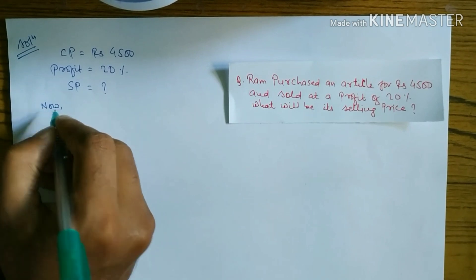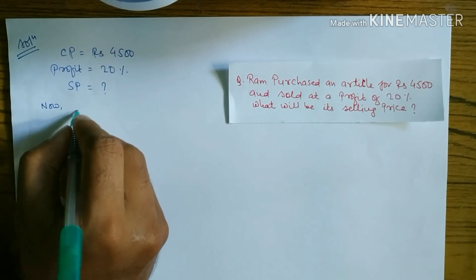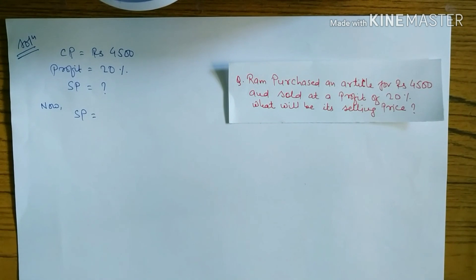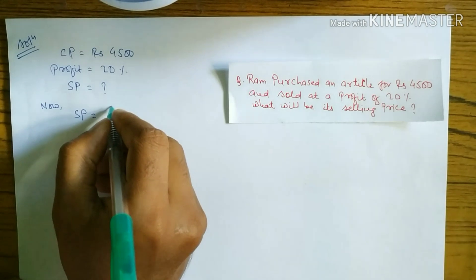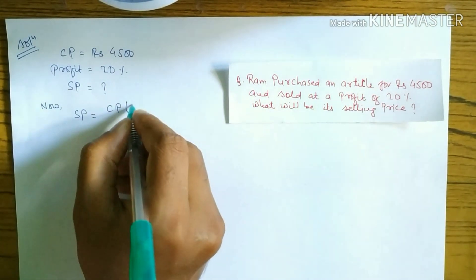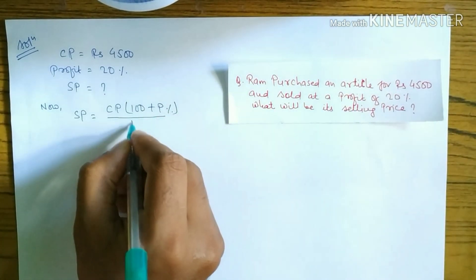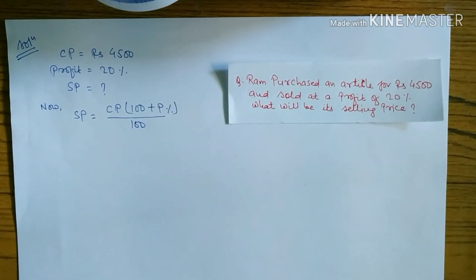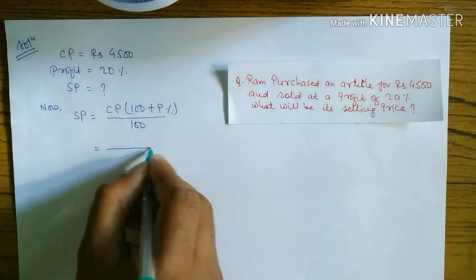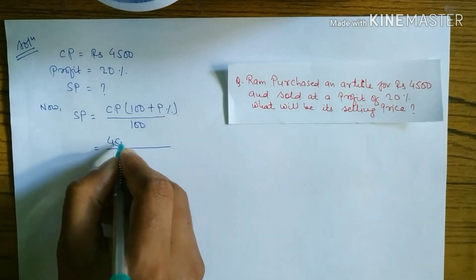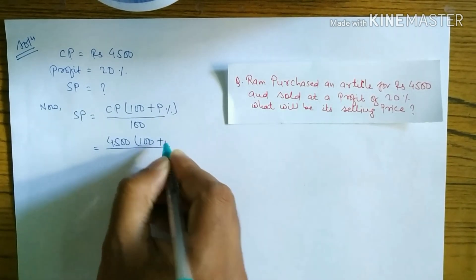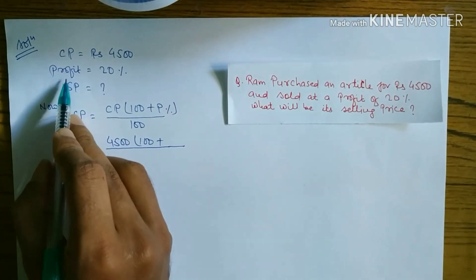Now what is the formula of selling price? SP is equal to what, where CP is given and profit percent is given? The formula is: CP times (100 plus profit percent) divided by 100.